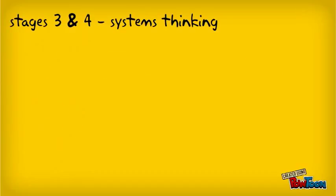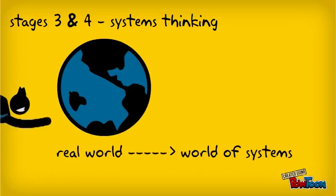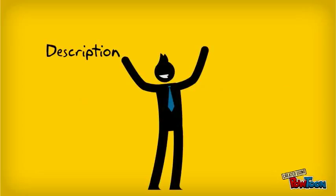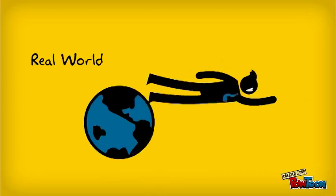Stages 3 and 4 involve systems thinking and are commonly known as the rich definitions of the relevant systems and developing the model stages. These two stages move out of the real world and into the world of systems. This is the stage out of which everything else grows, and that is why Checkland called it the root definition stage — it's the unique and most challenging part of the methodology. The root definitions and conceptual models of possibly relevant systems are developed, with the root definition being a description of a set of purposeful human activities conceived as a transformation process.